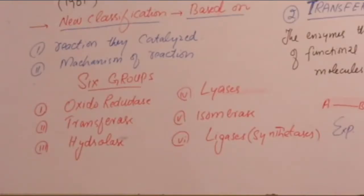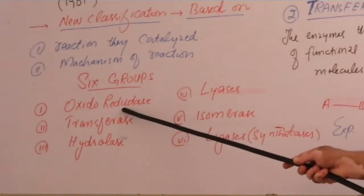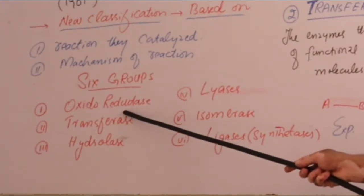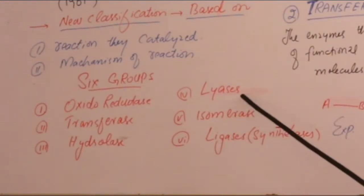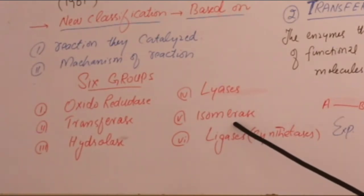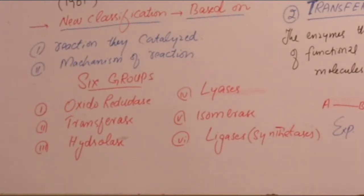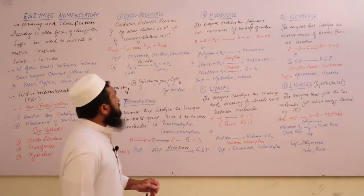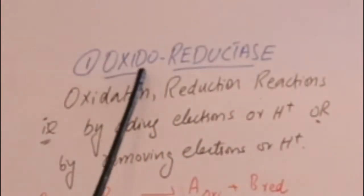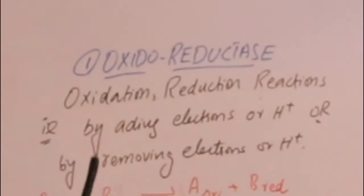Based on this, enzymes were classified into six groups, and this classification is still in use today. The six groups are: (1) Oxidoreductases, (2) Transferases, (3) Hydrolases, (4) Lyases, (5) Isomerases, and (6) Ligases, also called Synthetases.